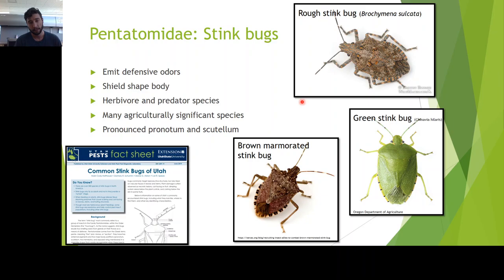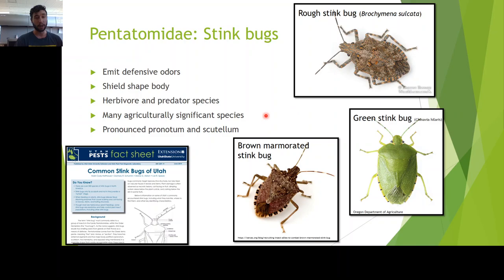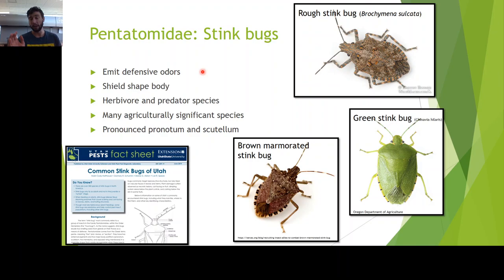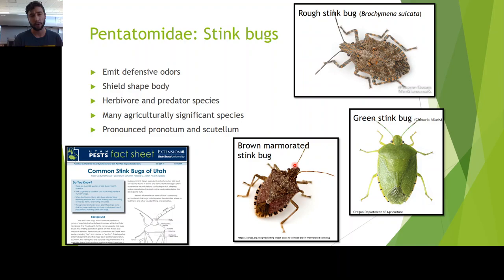Pentatomidae — what a legendary family. They should probably be the most famous family in the world, but I'm biased because I study pentatomids. I actually study the brown marmorated stink bug. Stink bugs made the list because this family is all over North America, and if you live anywhere in the Intermountain West you've encountered at least a few. They do emit defensive odors — the rough stink bug gives almost a candy-like smell, while the brown marmorated stink bug emits more of a cilantro-type smell. They usually have a shield-shaped body, which is kind of where the 'penta' comes from, with a very dramatic pronotum and scutellum.